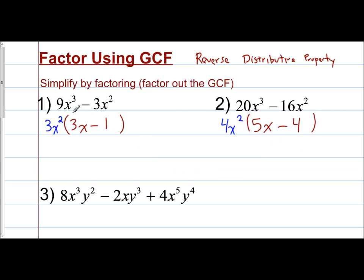Those were binomials — two terms. Let's apply GCF factoring to a trinomial with three terms. The GCF of the coefficients 8, 2, and 4 would be 2. For the variables: you have x cubed, x to the 1st, and x to the 5th, so the smallest exponent for x is x to the 1st, giving x. You have y squared, y cubed, and y to the 4th, so the smallest exponent is y squared. So your GCF is 2xy squared.